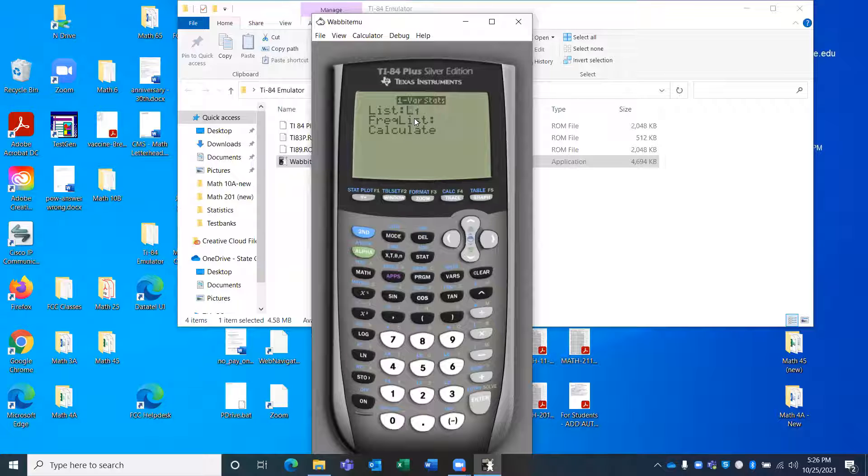If you have this kind, you've got to put in list L1, frequency list, leave it blank. Calculate, enter. Now, you want the S sub X, not the little squiggle sigma thing down below. You want the 27 number. You want that one. You want the S. It stands for sample standard deviation. That's the one you want.